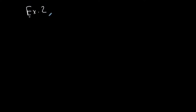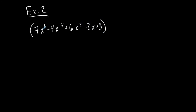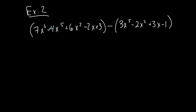I'm going to do one with subtraction. We have 7x to the 6th minus 4x to the 5th plus 6x squared minus 2x plus 3 — this is a long polynomial, it has 5 terms. And I want to subtract from that 3x to the 5th minus 2x squared plus 3x minus 1, which has 4 terms. So I'm subtracting a 4-term polynomial from a 5-term polynomial. This is a 6th degree polynomial minus a 5th degree polynomial.